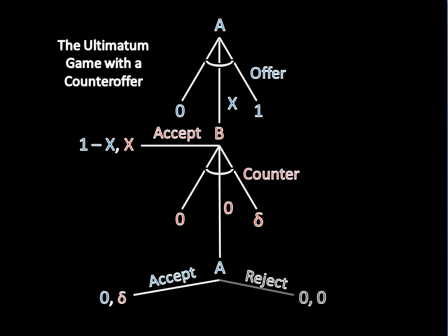So B offers zero and A accepts that offer. Now we have to backtrack to A's offer and see whether B will accept it. A knows that B will eventually receive the discount dollars if she rejects the offer. So to get B to accept his offer, A must give B at least that amount, at least discount dollars.